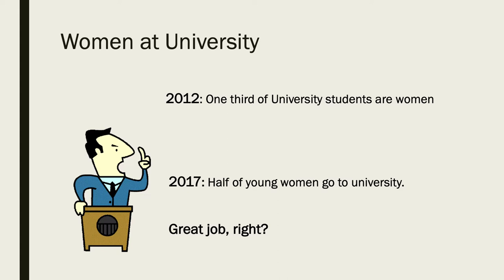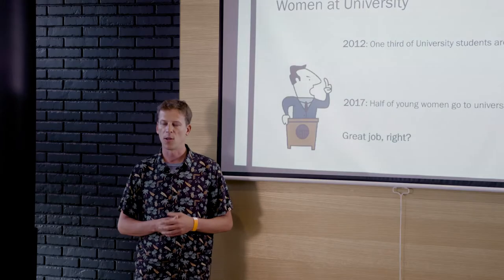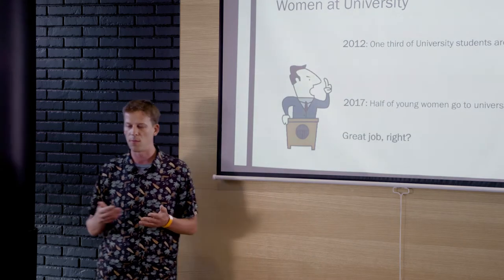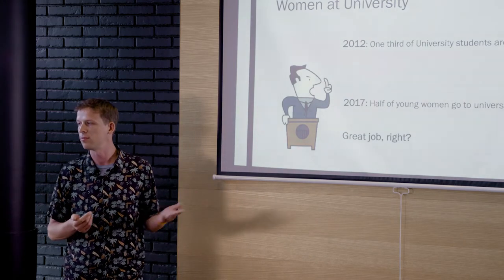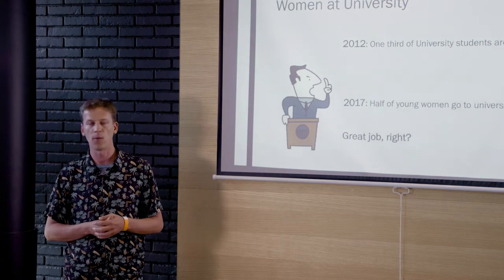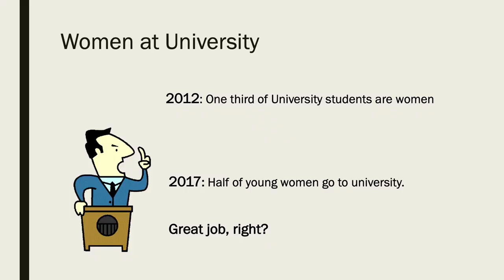It really happened actually, but I didn't find the actual data, so it's more a fictitious example here. So imagine some politician who arrives in power in 2012 for instance, and when he arrives about one-third of university students are women. And five years later he's finished his job and he's very happy and he claims that half of young women go to university. So he did a good job, right?